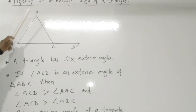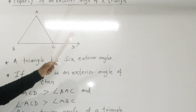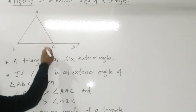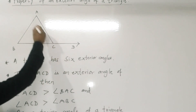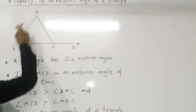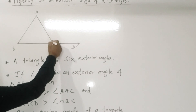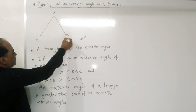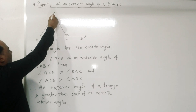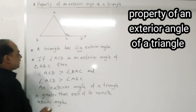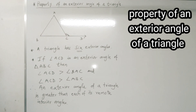Now, the property of an exterior angle of a triangle. A triangle has in all six exterior angles — at each vertex there are two exterior angles. If you extend a side at a vertex, one exterior angle is formed there. Similarly, if you extend AC, you get another exterior angle. So at each vertex there are two, giving six exterior angles in total.